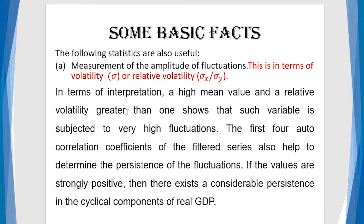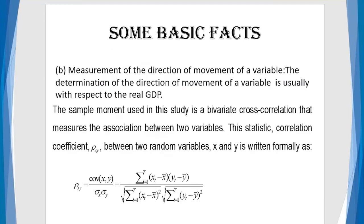In terms of interpretation, a high mean value and a relative volatility greater than one shows that such variable is subjected to very high fluctuation. The first four autocorrelation coefficient of the filter series also help to determine the persistence of the fluctuation. If the values are strongly positive, then there exists a considerable persistence in the cyclical component of the real GDP. Remember, I said GDP and its components. So, everything is done in relation to the GDP.